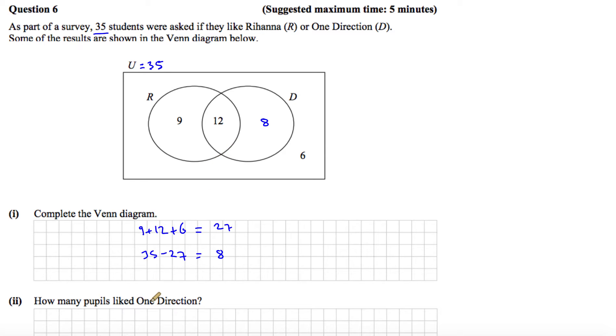Part 2 says how many pupils liked One Direction? Well the pupils who like One Direction are the 8 people here and the 12 people here. Now even though these 12 people like Rihanna as well, the question is only asking do they like One Direction? So it's the 12 plus the 8 which gives us 20 people who liked One Direction.